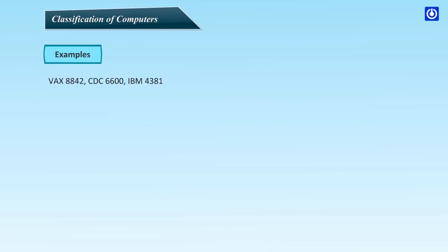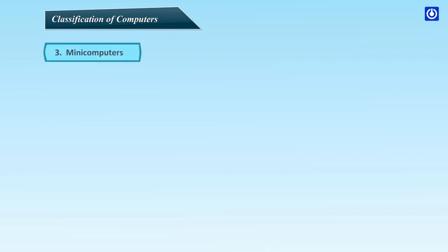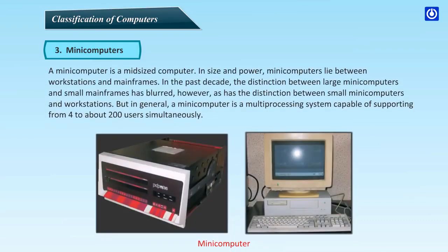Examples of mainframe computers: VAX 8842, CDC 6600, IBM 4381. Minicomputers: A minicomputer is a mid-sized computer. In size and power, minicomputers lie between workstations and mainframes. In the past decade, the distinction between large minicomputers and small mainframes has blurred, as has the distinction between small minicomputers and workstations.